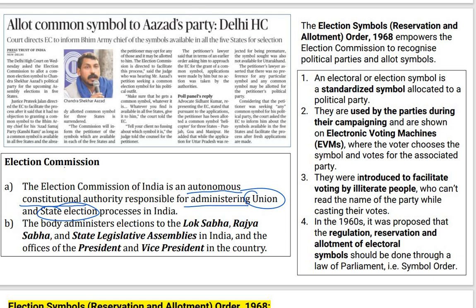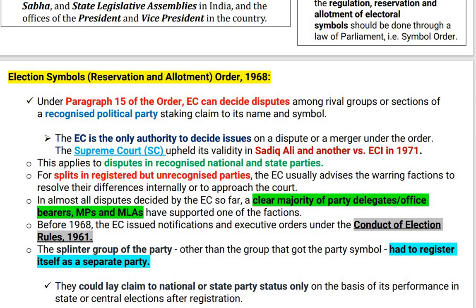These symbols were introduced to facilitate voting by illiterate people who cannot read the party or candidate name. The allotment of symbols originated in the 1960s, when a symbol order was passed to allot symbols to parties. This order also ensures that two parties do not get the same election symbol. In the Election Symbols Order 1968, there is a very special provision — Paragraph 15 — through which the Election Commission can decide and solve disputes among rival parties over a political symbol.